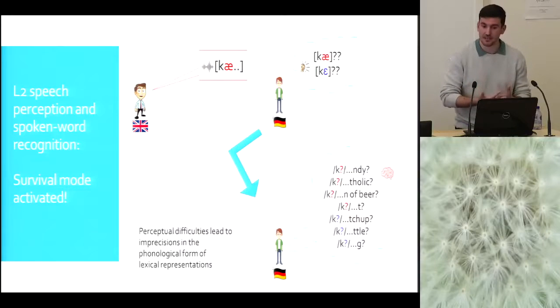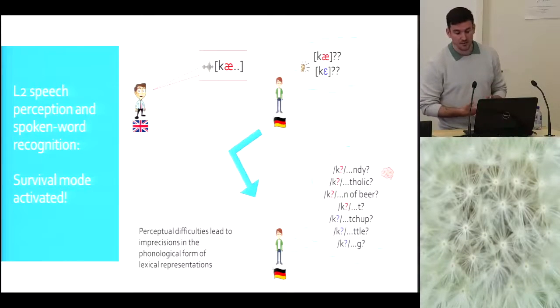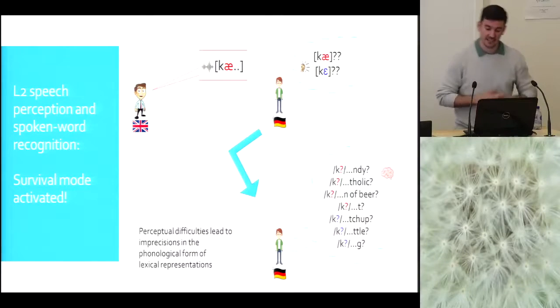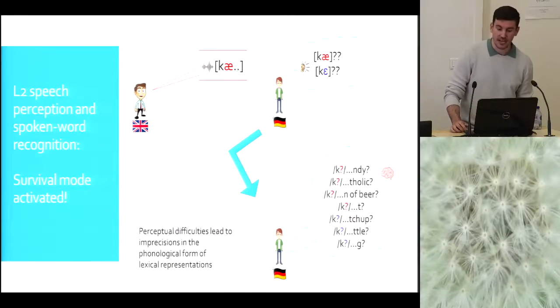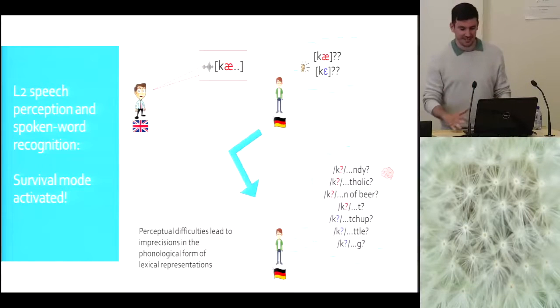But what happens is that these perceptual difficulties also lead to imprecisions in the phonological form of lexical representations. That happens even to the extent that even when you get to the point that you can perform the first step, so you're quite good at actually recognizing the sounds themselves, you still have problems when it comes to words. Because words are fuzzy, the representations are fuzzy, and the contrast or the vowels are not accurately represented in these words. So when activating words in the lexicon, the native speaker of German may also activate candy, Catholic, but he may also activate ketchup or kettle or keg. That makes all the process much more complicated for the L2 learner versus a native speaker.